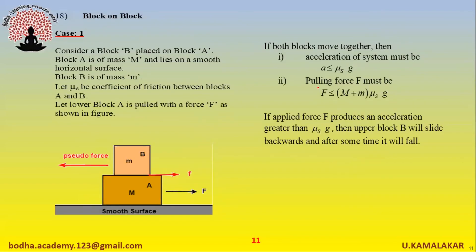Block on block concept, Case 1: Consider block B placed on block A. Block A is of mass M and lies on a smooth horizontal surface. Block B is of mass m. Let mu_s be the coefficient of static friction between blocks A and B. If lower block A is pulled with force F and both blocks move together, then acceleration must be less than or equal to mu_s times g, and pulling force F must be less than or equal to (M plus m) times mu_s times g. If applied force F produces an acceleration greater than mu_s times g, then upper block B will slide backwards and after some time it will fall.